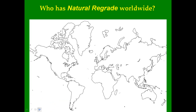The diamonds on this map can represent several users concentrated in an area. Natural Regrade first caught people's notice in the southwestern USA and its use has spread across the United States and North America into Australia, Europe, Africa, Asia, and Central and South America. The only continent without licenses is Antarctica.